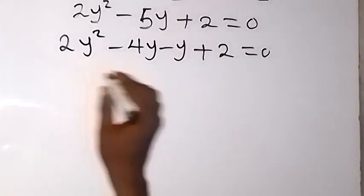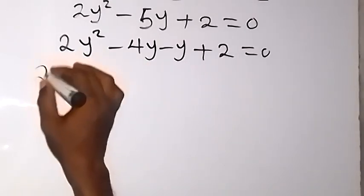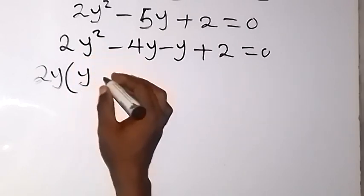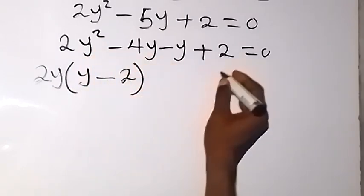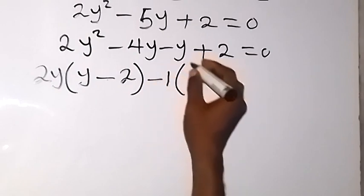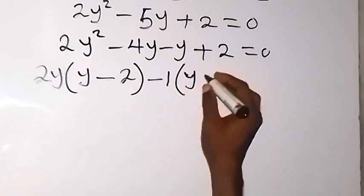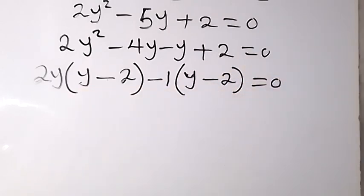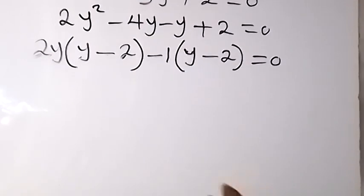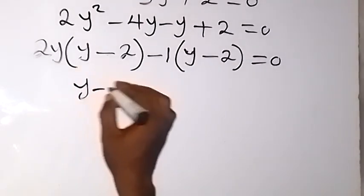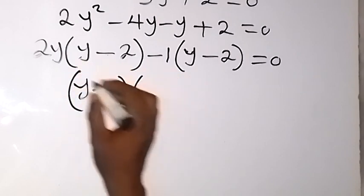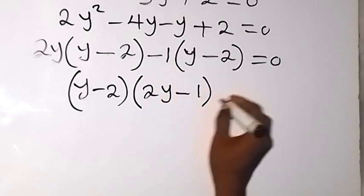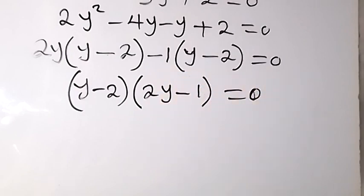We group and factor. From the first two terms, 2y is common, giving 2y(y minus 2). From the last two terms, minus 1 is common, giving minus 1(y minus 2). So we have (y minus 2)(2y minus 1) equals 0.